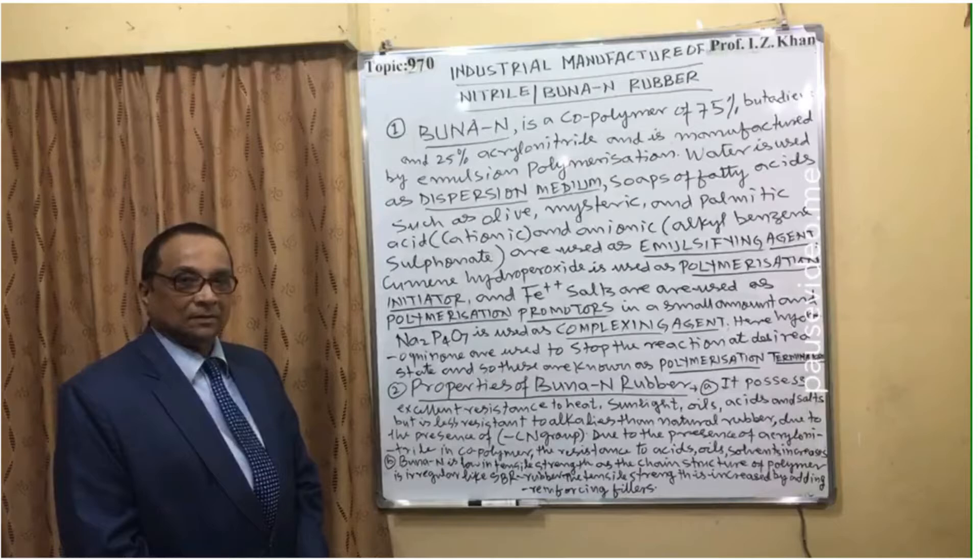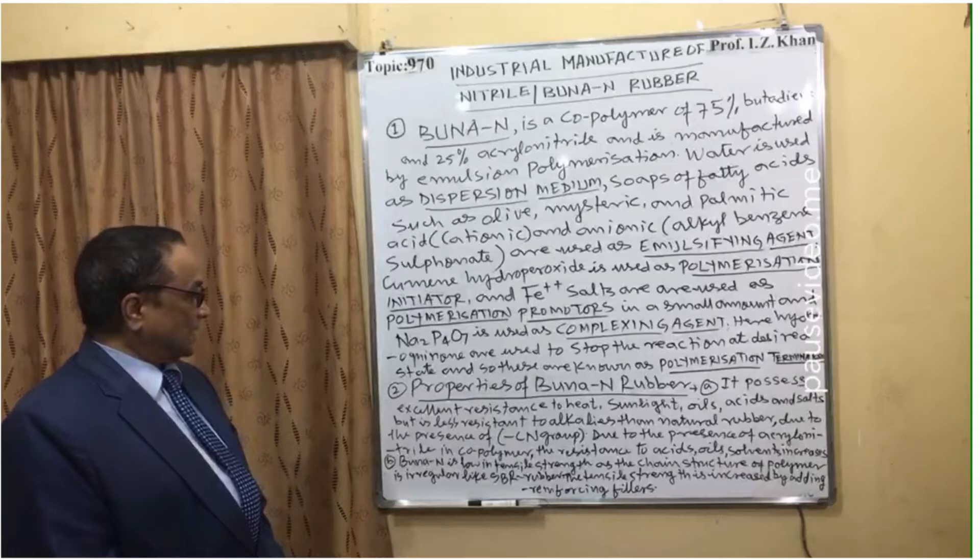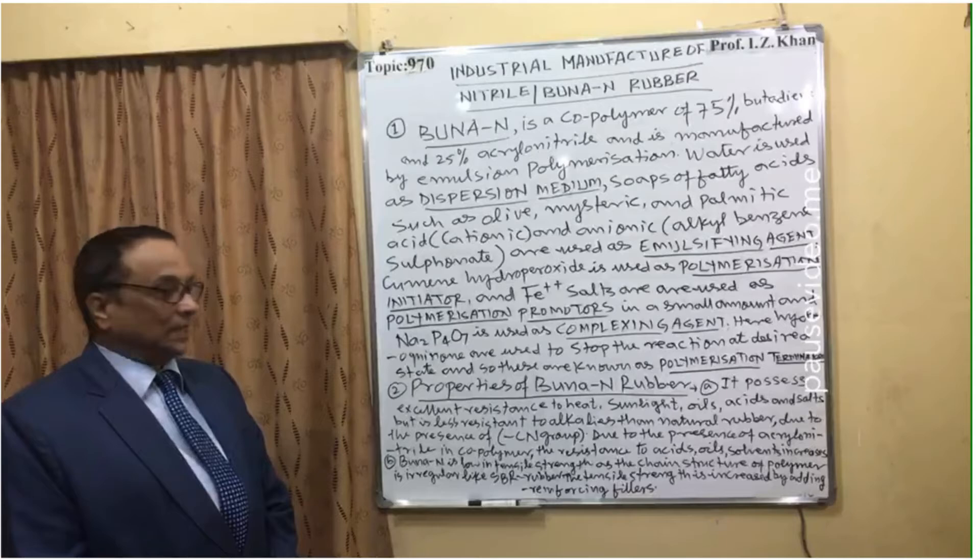Moving to the properties of Buna N or nitrile rubber: it possesses excellent resistance to heat, sunlight, oils, acids, and salts, but is less resistant to alkalis as compared to natural rubber.